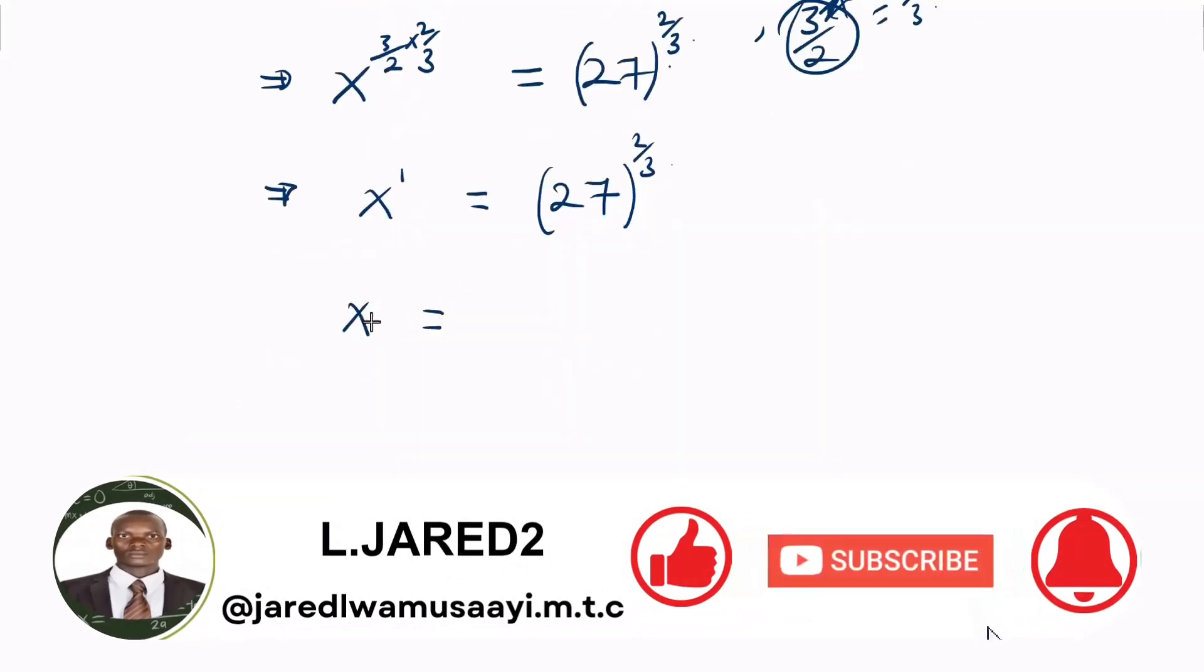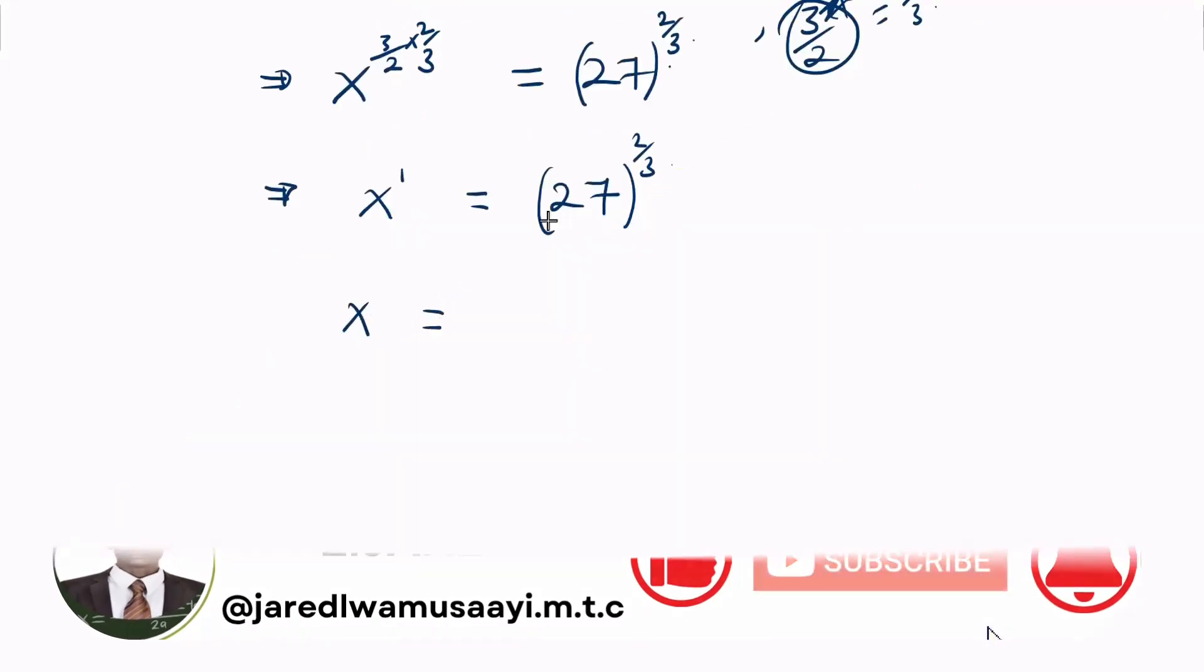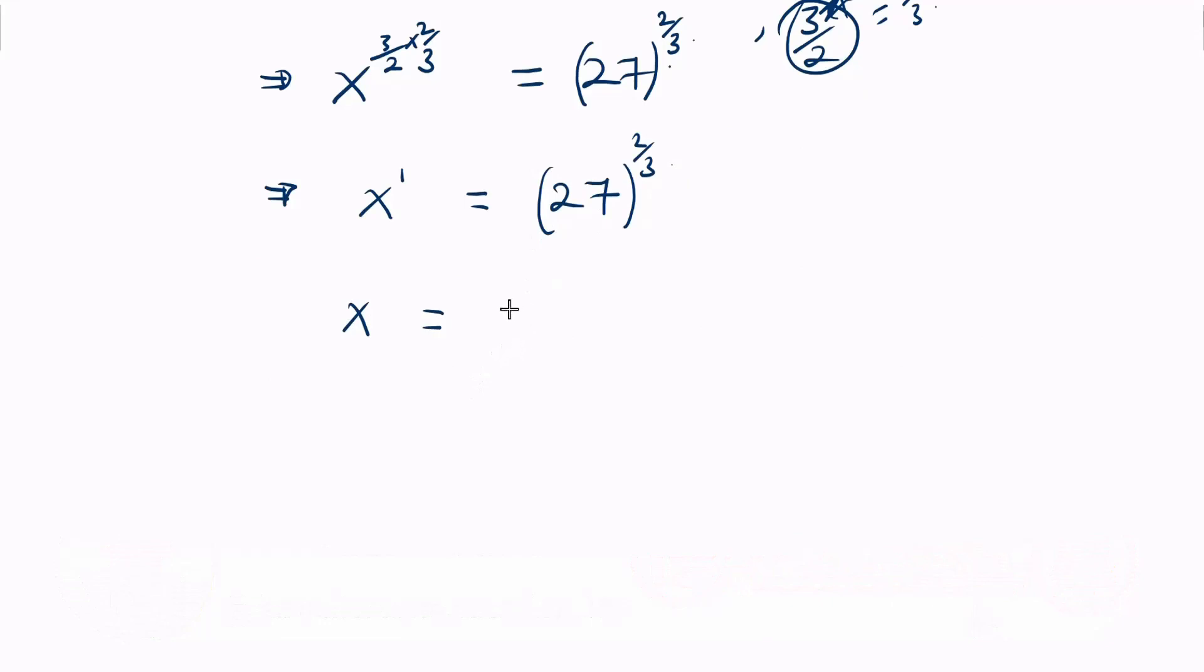Therefore, we have x equal to—we can now split this 27 in terms of 3. 27 is the same as 3 to the power 3, but there's another power which is 2 over 3.